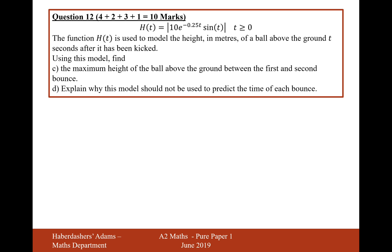Moving on to the C and the D parts, the function h of t is used to model the height in metres of a ball above the ground t seconds after it has been kicked. Using this model, find the maximum height of the ball above the ground between the first and the second bounce.